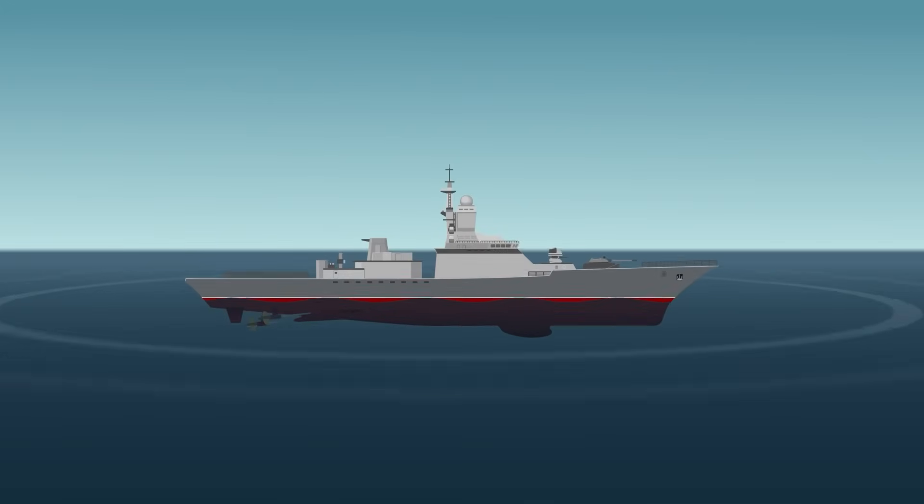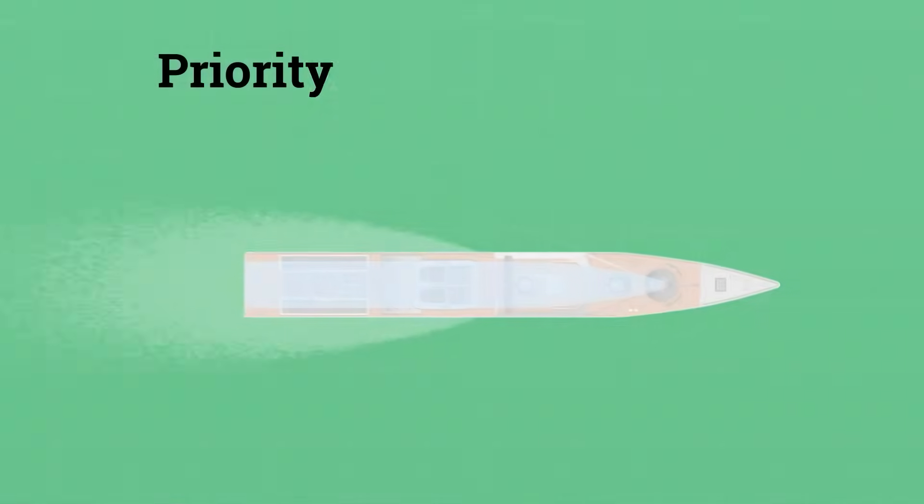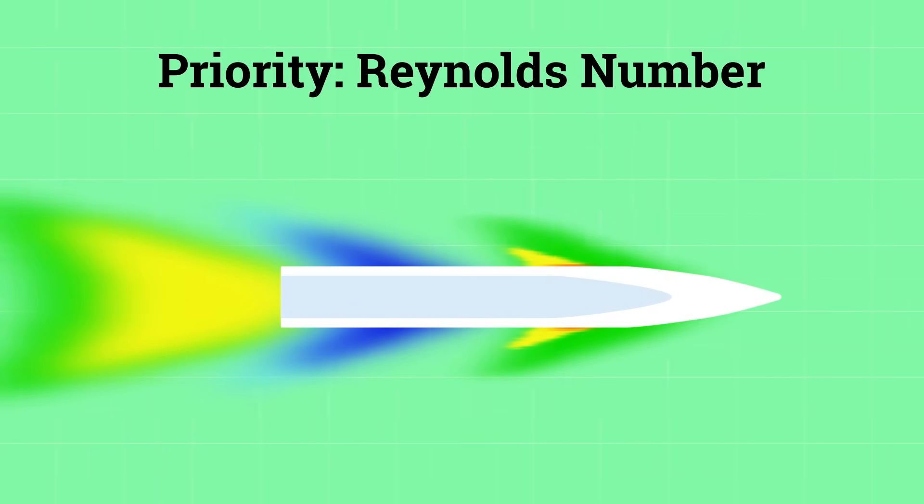High-speed craft like patrol boats trade wave-making for skin drag. Here, Reynolds number similarity climbs in priority, and the experimental strategy shifts accordingly.